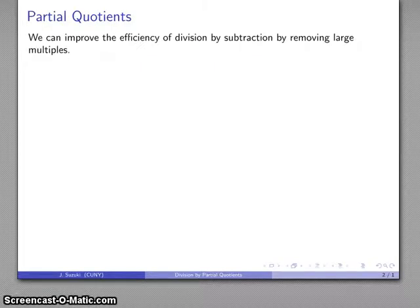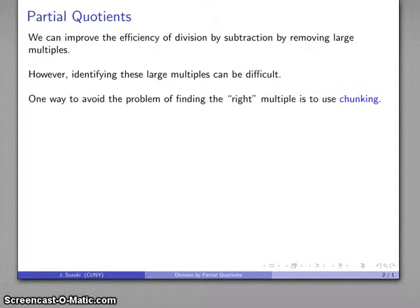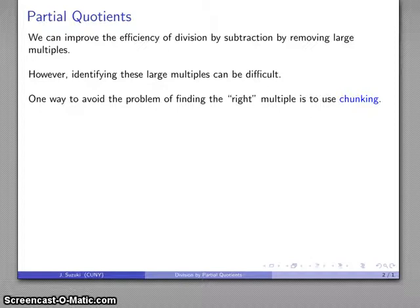One thing we can do to improve our process is to subtract large multiples, but unfortunately identifying these multiples can be difficult. However, we don't have to find the right multiple or the perfect multiple. We can use what's called chunking to avoid a multiple that works, and this is the basis of our division by partial quotients.